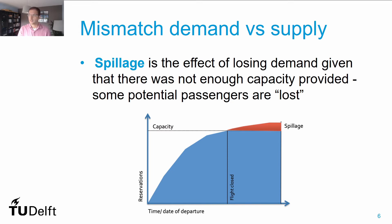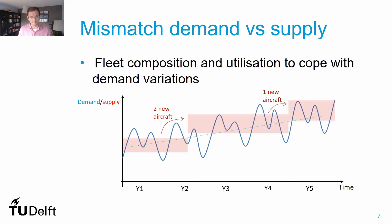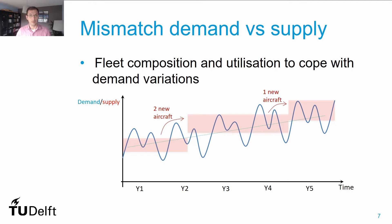Ideally, the airline would like to avoid both spoilage and spillage. Ideally, the airline would like to fly with a full aircraft at a fair price paid by the passengers. If we go a little further in this analysis, you can think about the implications this may have in terms of fleet composition and the way you use your fleet.